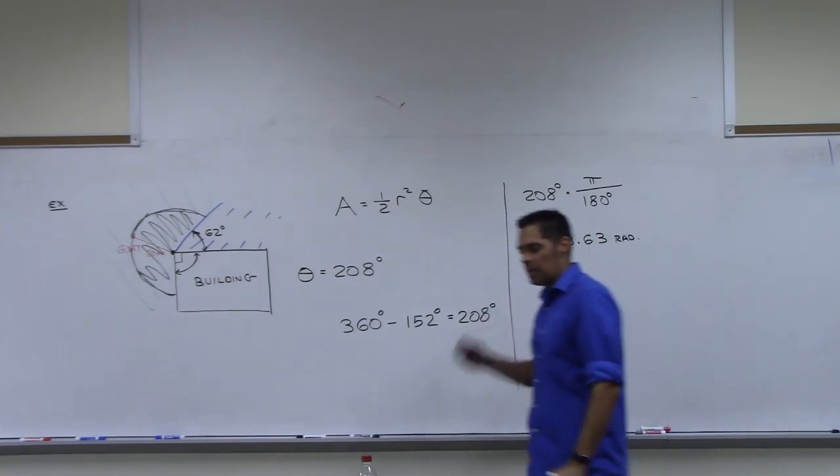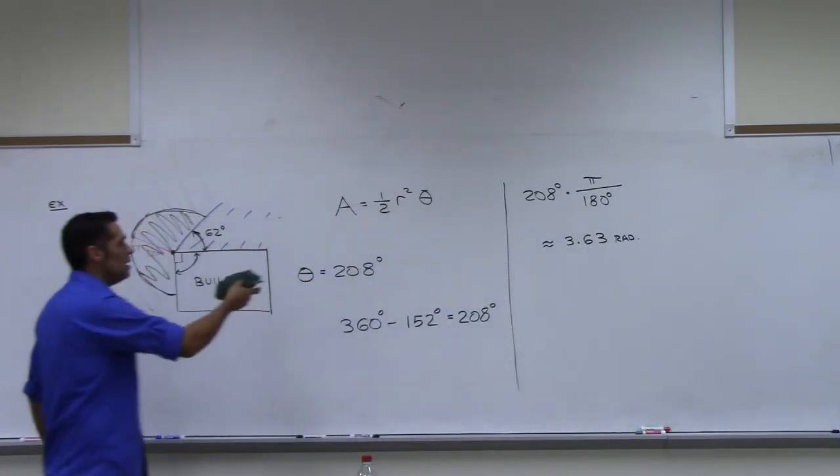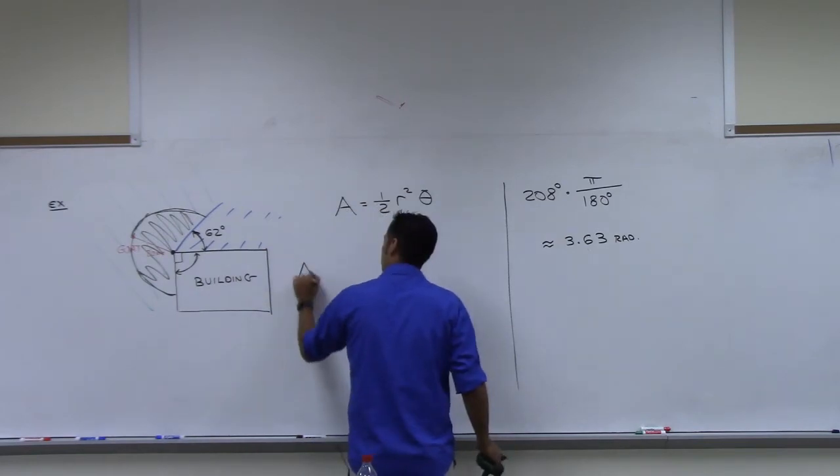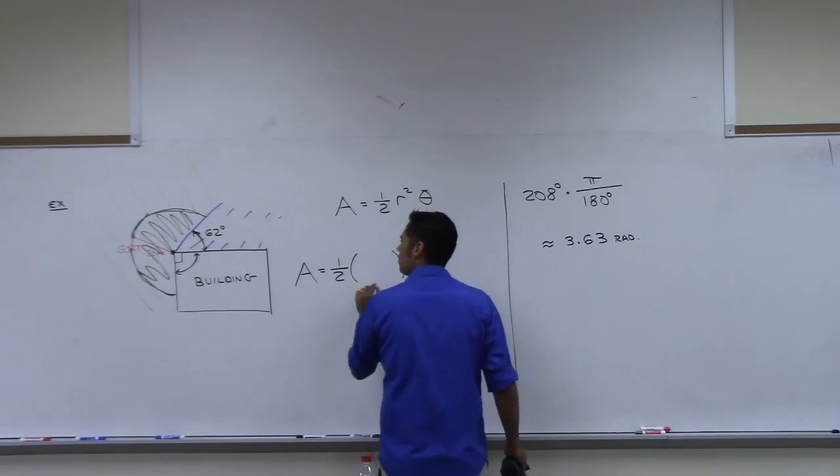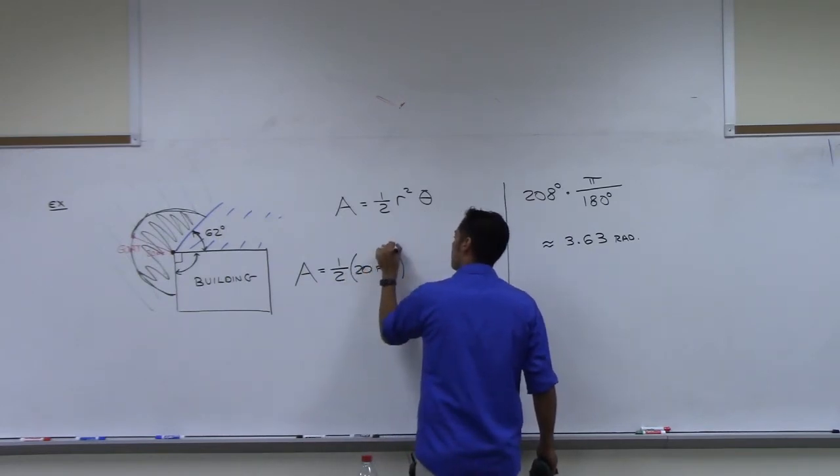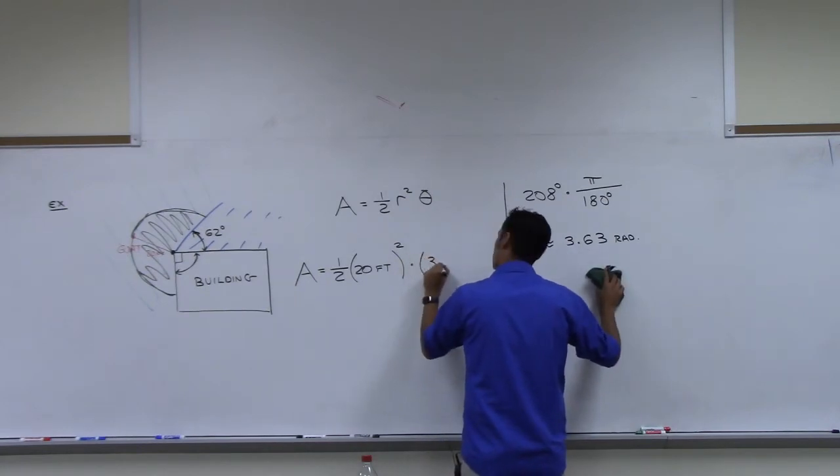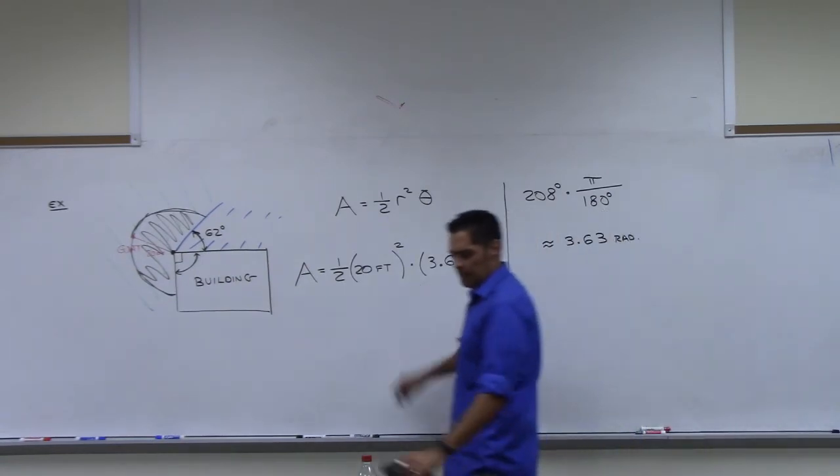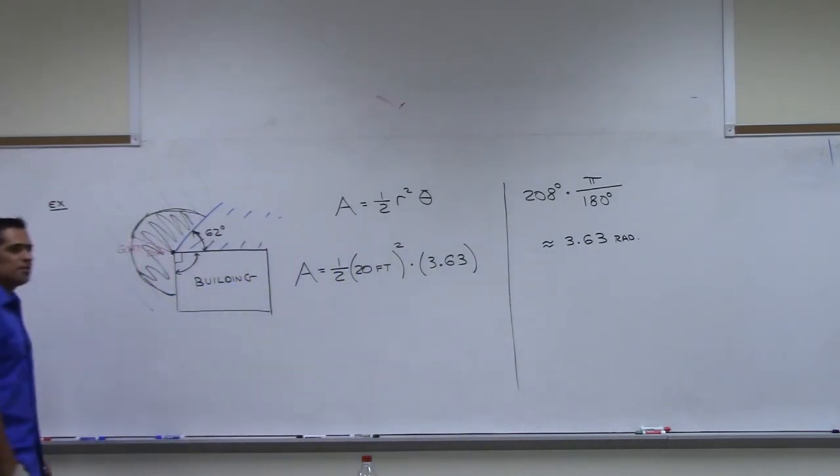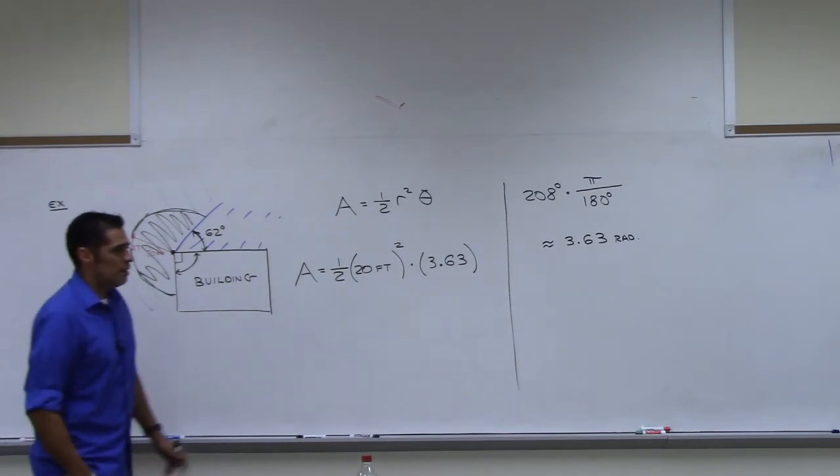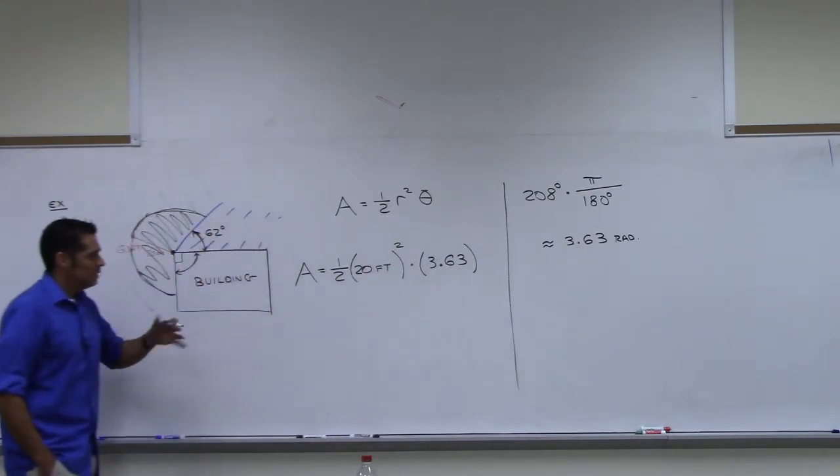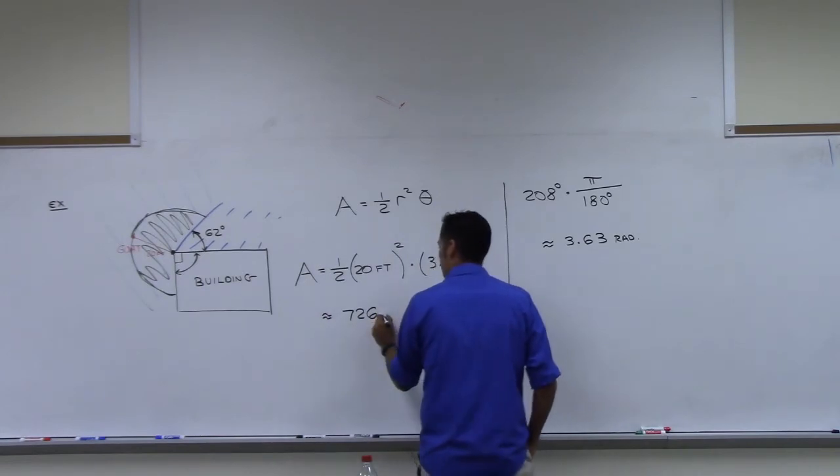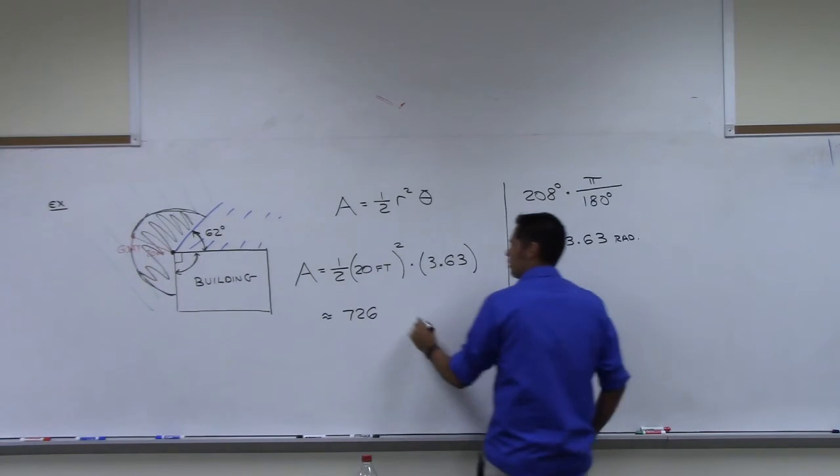And now I can come into this formula and I can plug everything in. So the area that this poor goat can graze through is one half r, which was 20 feet. It's been scribbled on over there. 20 feet squared times 3.63. And we get to square it. So what happens when you square 20 feet? 400 square feet. You get 400 square feet. And then half, so 200 square feet. And then by 3.63, I don't know, something. 726. 726 point something? No. It came out nice? Yeah. Oh, nice. Okay. Square feet.